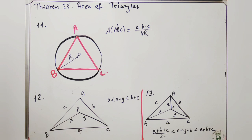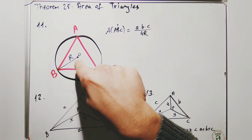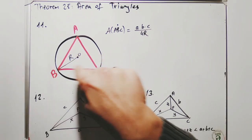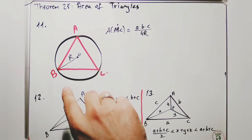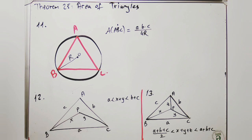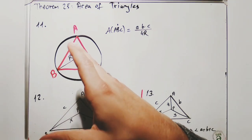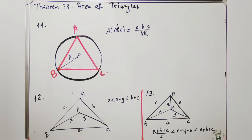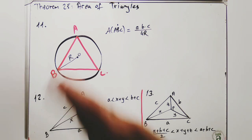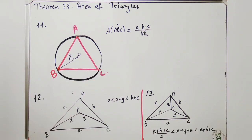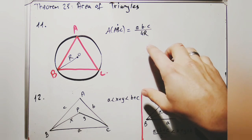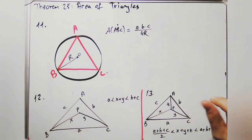The circumscribed circle (circumcircle) of a polygon is a circle passing through all vertices. The center is called the circumcenter and its radius is the circumradius R. The area of triangle ABC can be found as: Area = (A × B × C) / (4R).